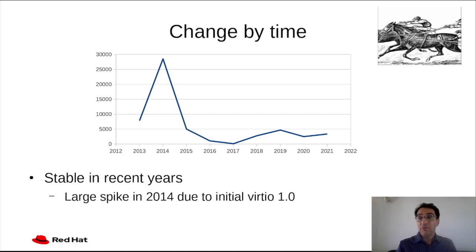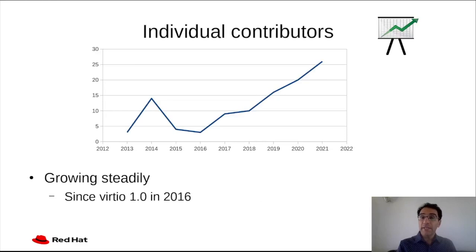It's easy to track changes made to the Virtio specification over time, because we maintain the history on GitHub. Looking at the change history, we can see that the rate of change has been stable in most recent years. You can only see a large spike around 2014, which is due to our work on the initial Virtio 1.0 revision, during which we imported and documented a large body of existing code. However, the number of individuals contributing to the specification has been growing steadily ever since Virtio 1.0 was released in 2016.